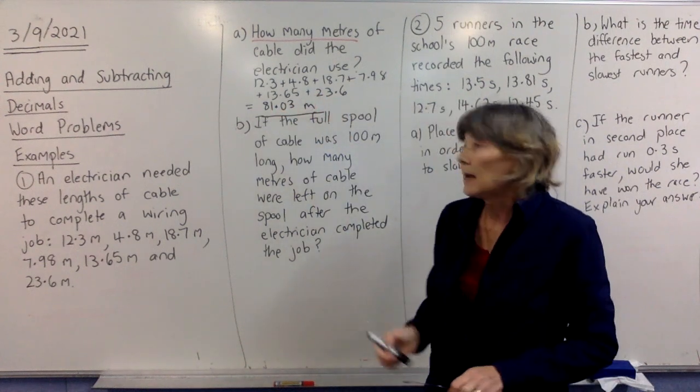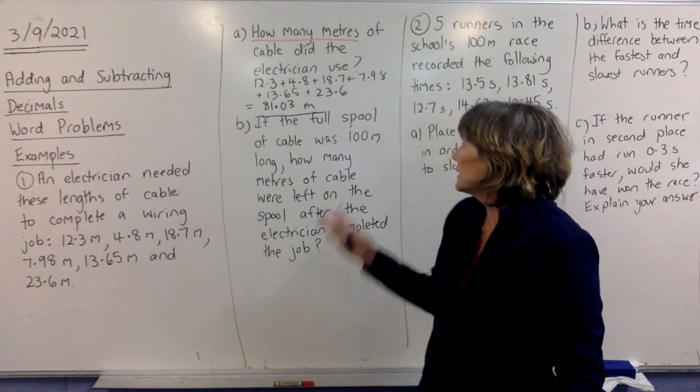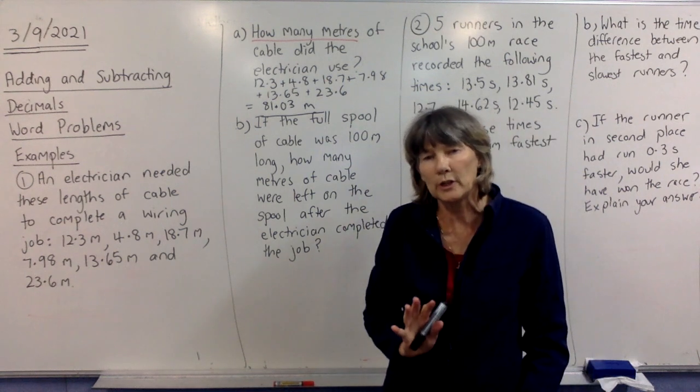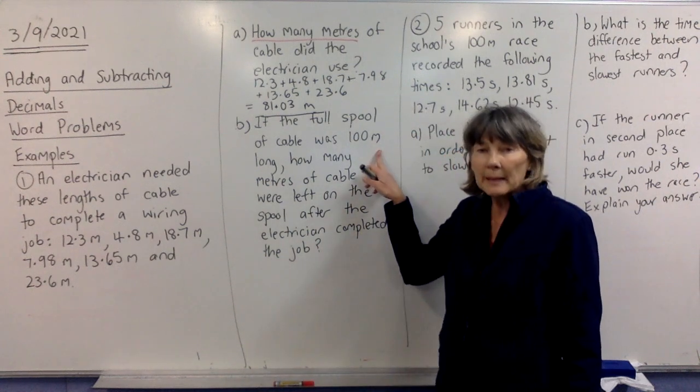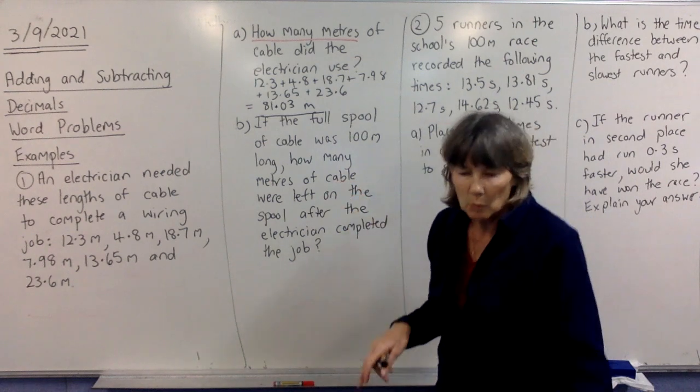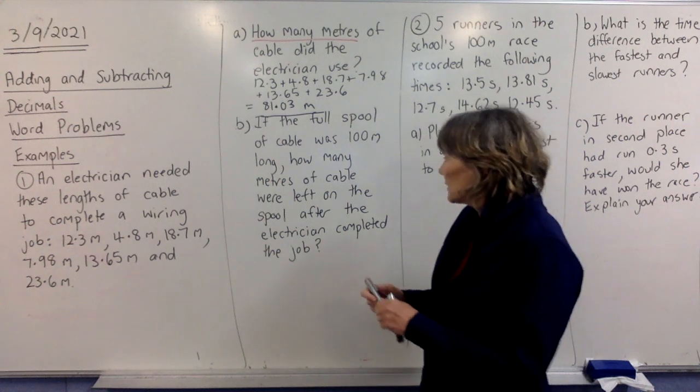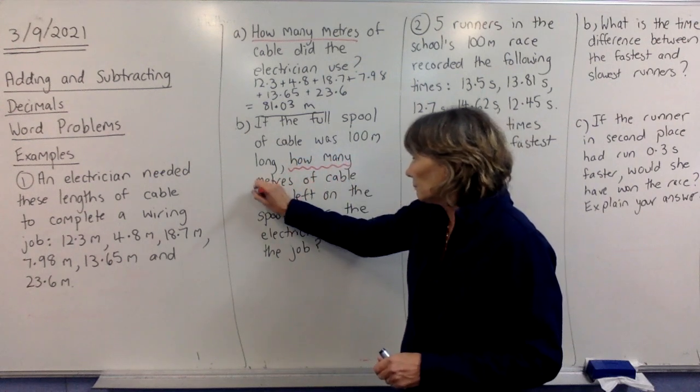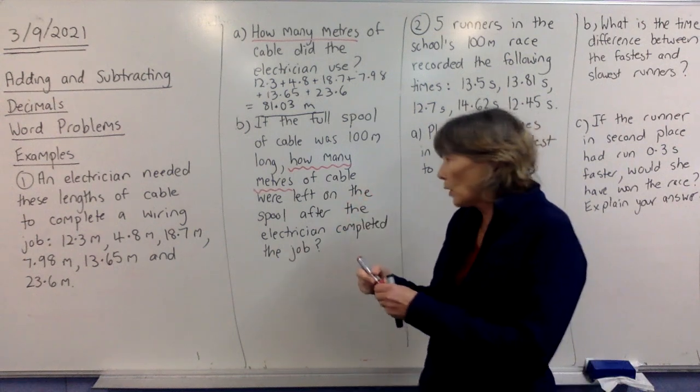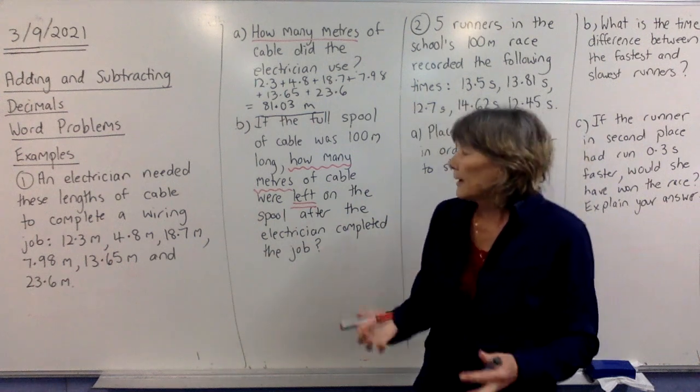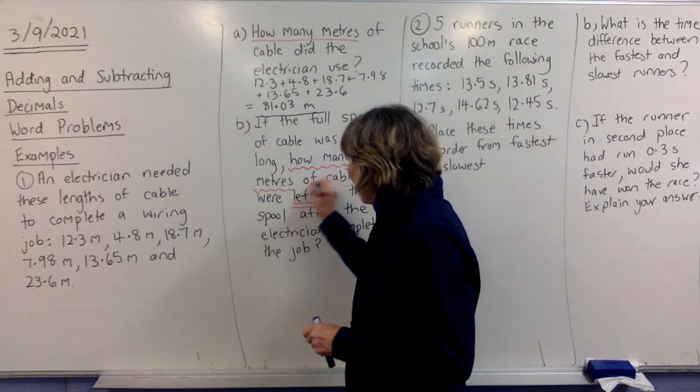So, the next question says, if the full spool of cable was 100 metres long. Now, some of you are going to look at it and go, I don't know what a spool is. It doesn't really matter. It's not going to affect what the question is asking for. But I'll explain what a spool is in a minute. If the full spool of cable was 100 metres long, how many metres of cable were left? So, the really important thing of these word problems is you identify key words that are going to help you. All right. So, they're asking for how many metres. Well, that's fine because everything's been in metres, so we don't have a problem with that. Of cable were left. Now, when they ask for left, how much was left? There's going to be a subtraction. Okay. So, that's a little hint that you are going to subtract.